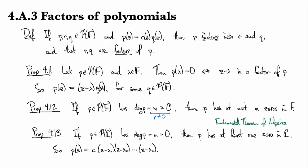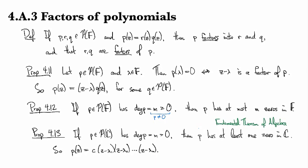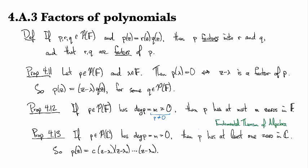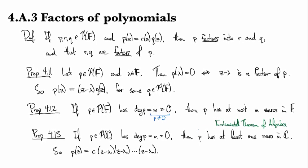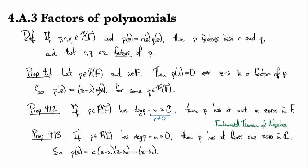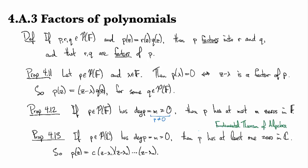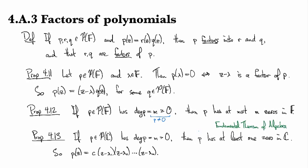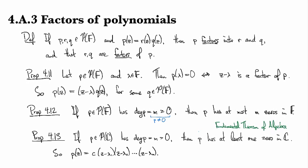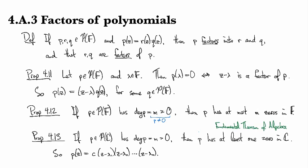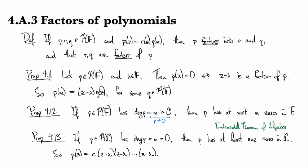Just by iteration, you just keep saying, oh P has at least one zero. Okay, well if it has that one zero, then factor it out using the part that we saw before, and now you've got something that has degree one less. Keep doing that. Eventually you get down to zero because you started with a finite number. Therefore, you're done. Boom.